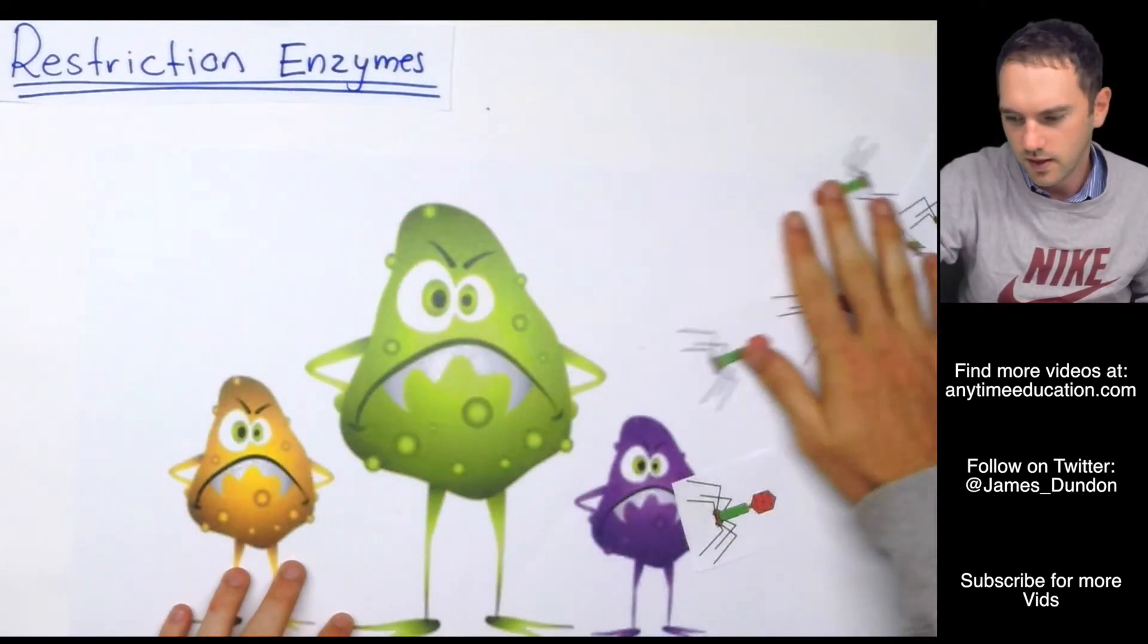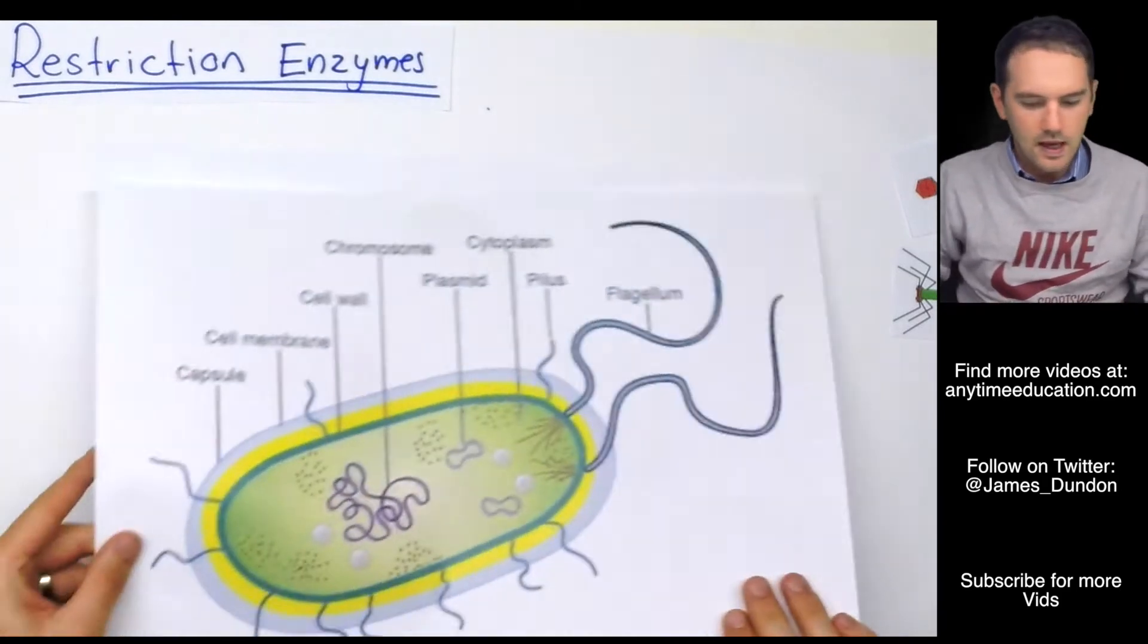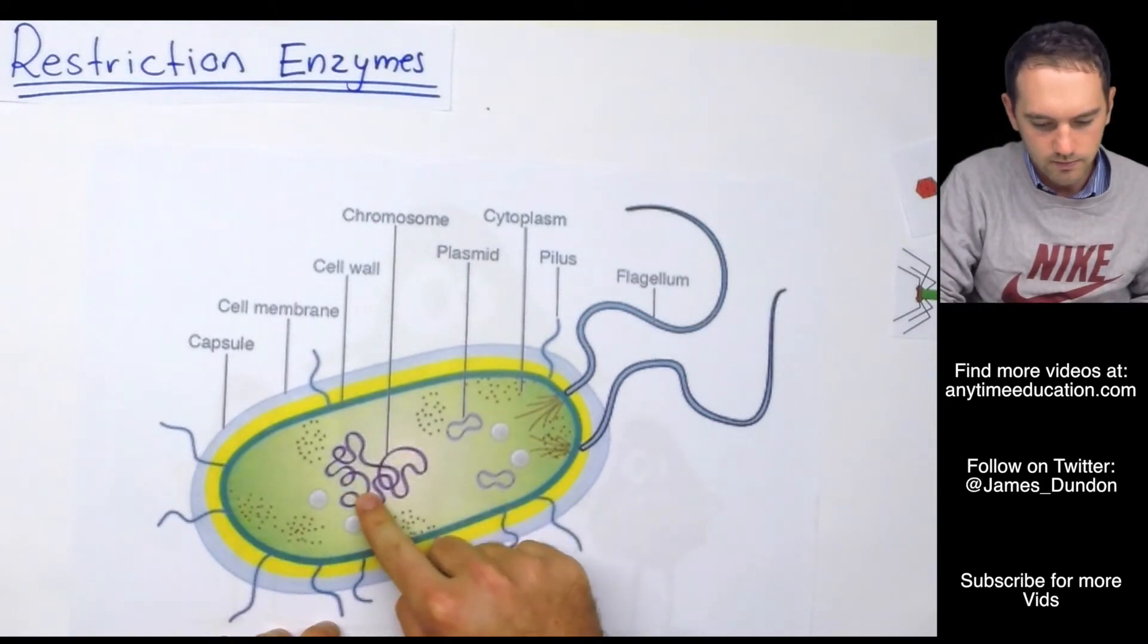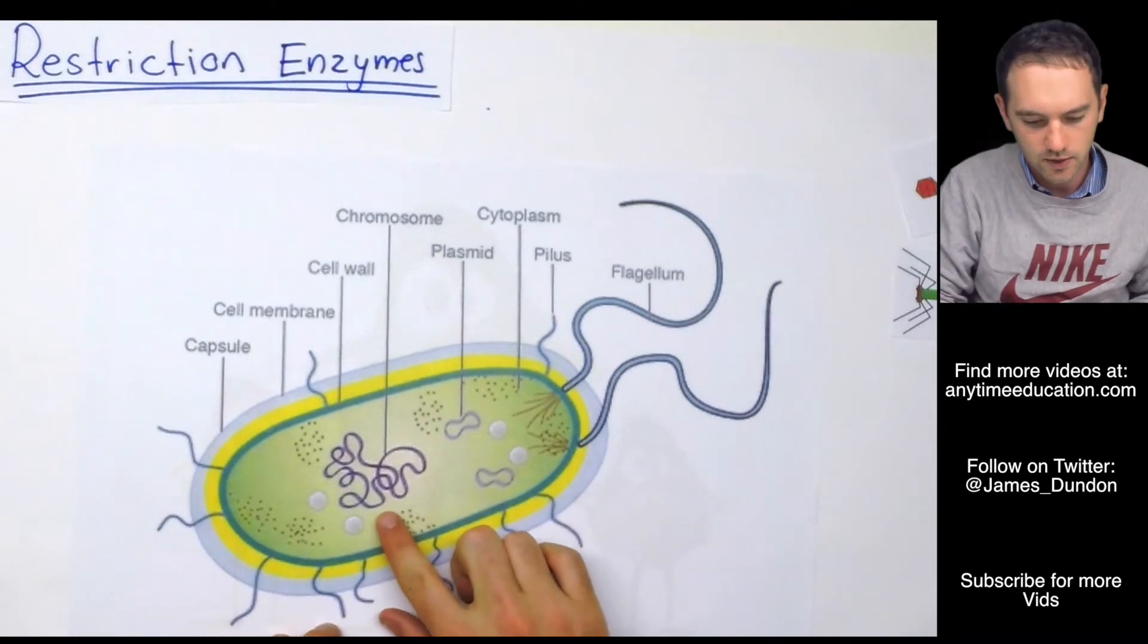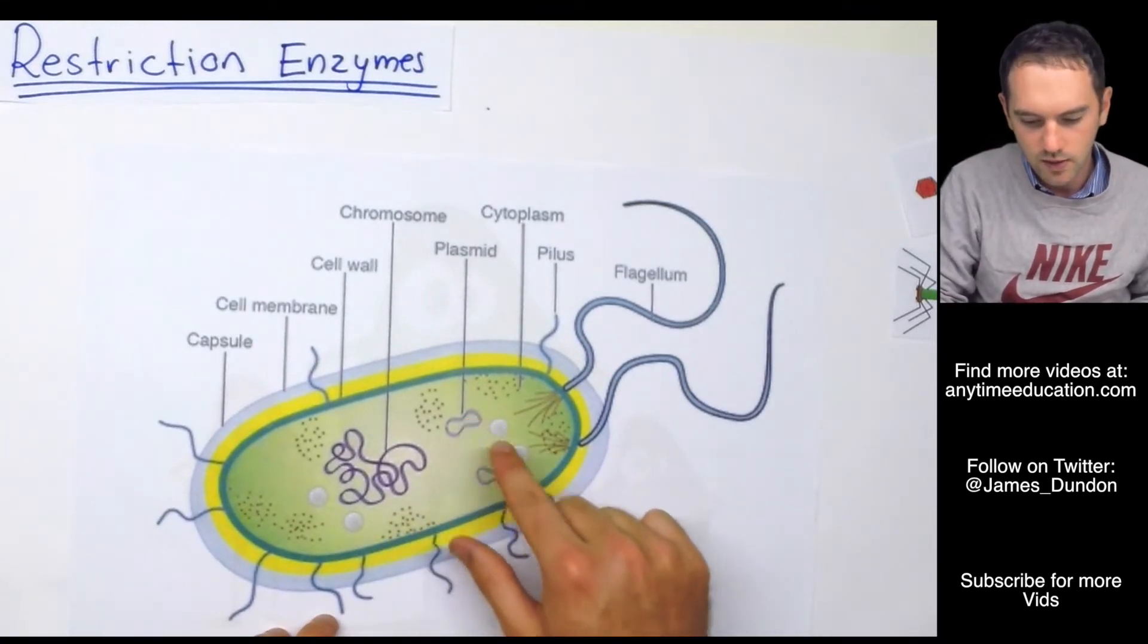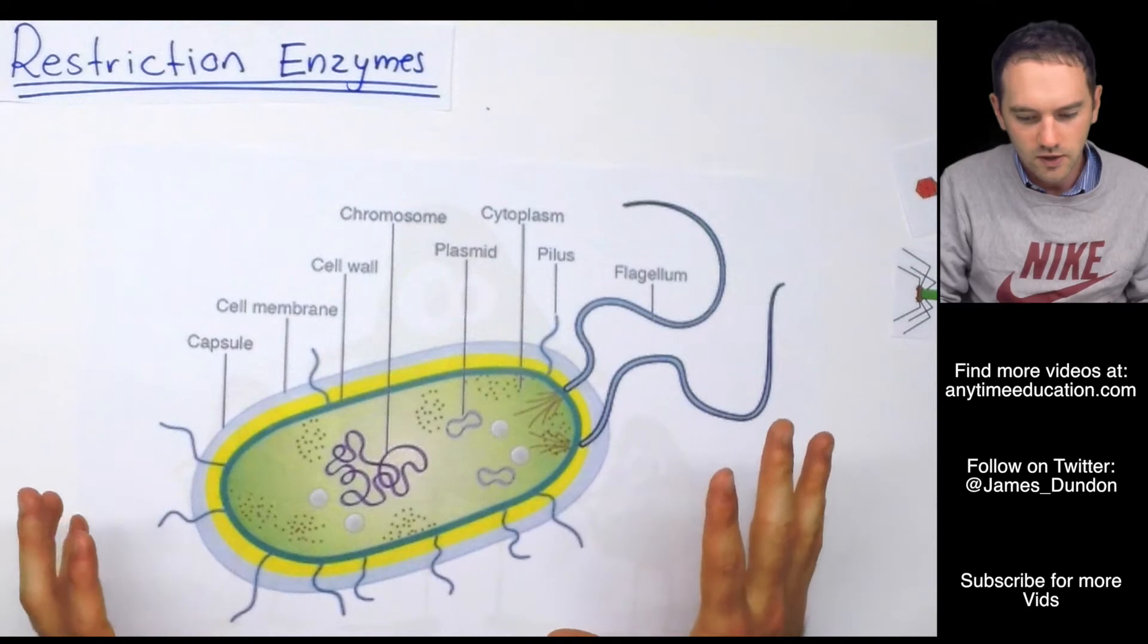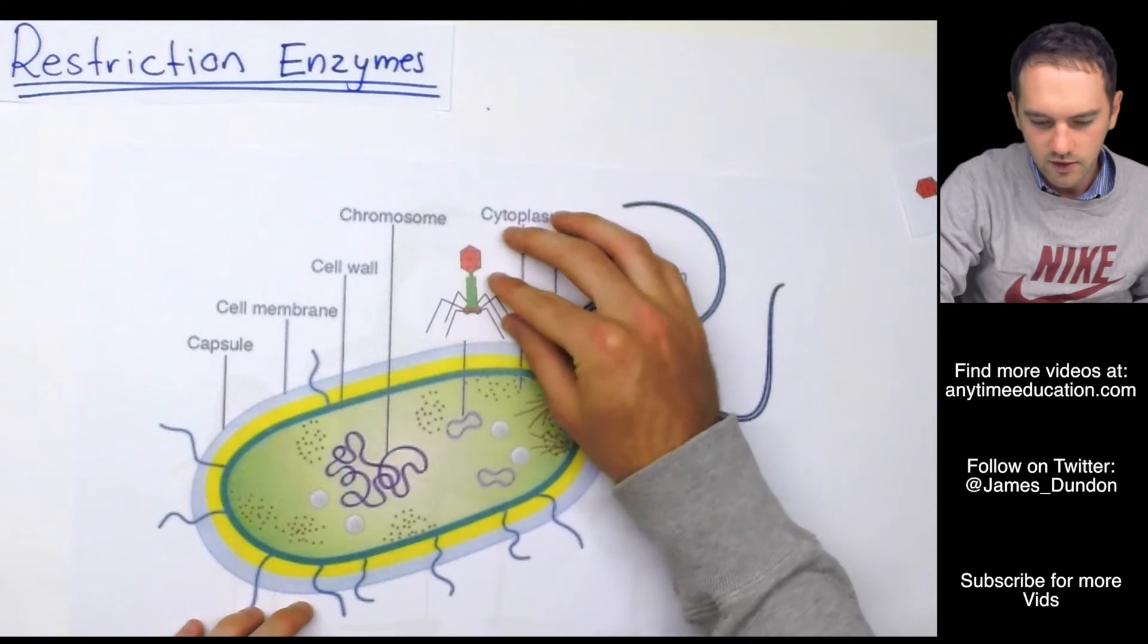So remember, bacterial cells are only single-celled organisms. They've got their chromosome in a circular fashion, not linear DNA like in a eukaryotic cell, and they've also got these little circular other sections of DNA called plasmids. So you've got no immune system, you've got no way of defending yourself against viruses.